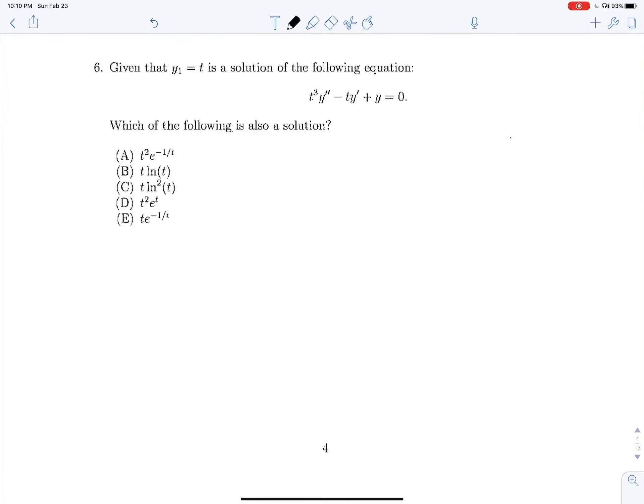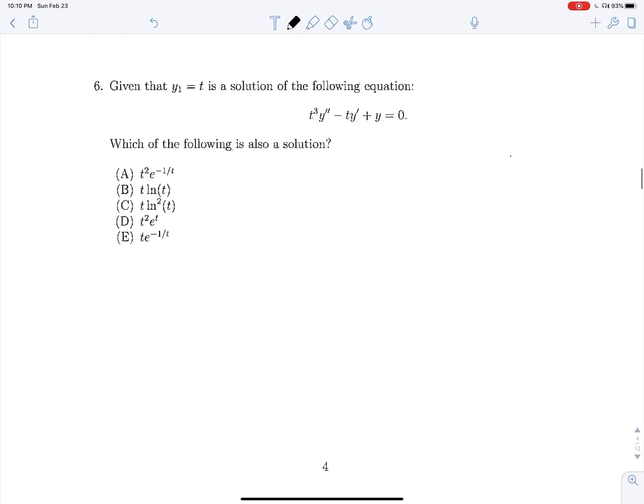6, given that y1 is equal to t is the solution of the following equation, which of the following is also a solution? So first off, we're going to put this in a form where y double prime is on its own. So y double prime minus 1 over t squared y prime plus 1 over t cubed y is equal to 0.